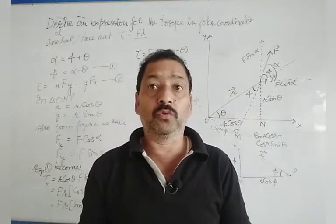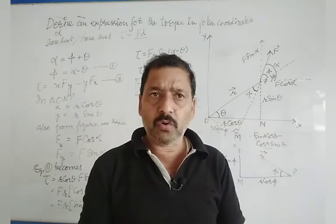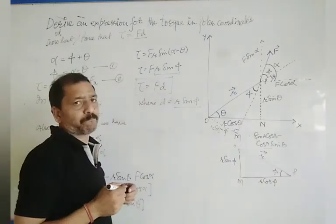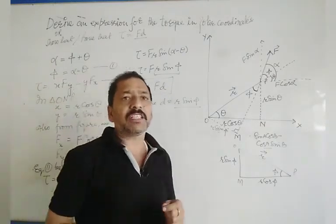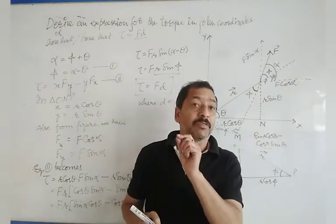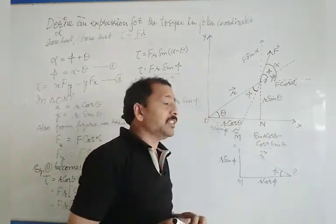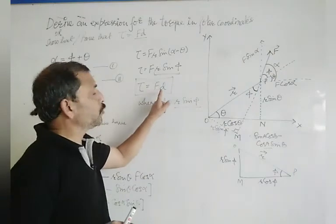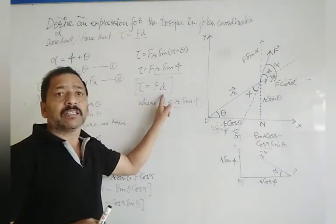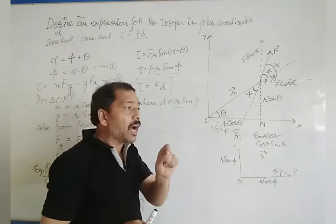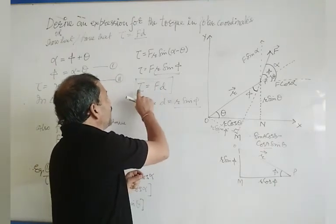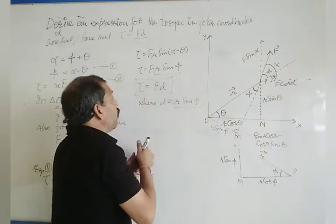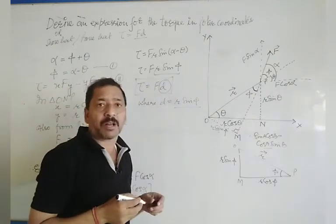Now one thing you can see is what tau becomes. Tau is equal to F into D. One question which is asked is: what is the dependence of the torque on the lever arm? So what happens is, you can see from here that for a given magnitude of the force, tau is equal to F into D. Therefore, torque can be less or greater depending upon the distance D. And this distance D, you know, we also call the lever arm.